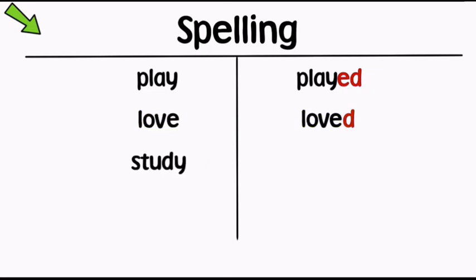For verbs that end in a consonant plus y, we change the y to -ied.